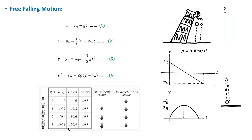At t = 3 s the velocity is −29.4 m/s. Throughout the motion, the velocity vector is increasing in magnitude, but the acceleration vector is constant throughout the motion because the force of gravity on the object remains the same while it is falling. Note that both displacement and velocity are negative because the motion is in the negative y direction.